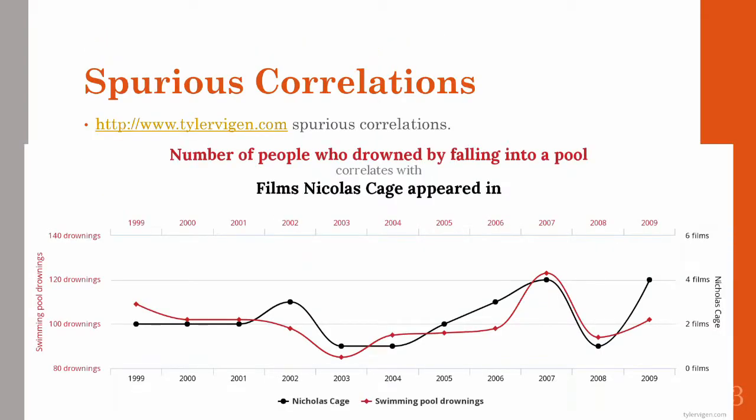There are a lot of these spurious correlations out there. For instance, there is a correlation between the number of people who drowned by falling into a pool and the number of films Nicolas Cage was in that particular year.